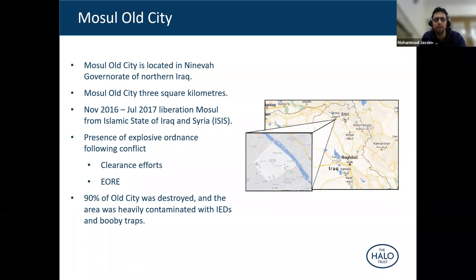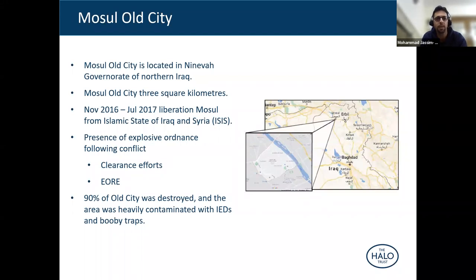Thank you, India. My name is Mohamed Jasim. I'm working in Al-Ghad Forum on Child Care since 2017. Mosul city is located in the northern part of Iraq, and the size of the old city is about three square kilometres. This area suffered from the liberation battles between the Iraqi army and ISIS members, so about 90 percent of the old city was destroyed and the area was fully contaminated with IEDs of different types and booby traps. This area needs clearance projects and risk education for everyone.